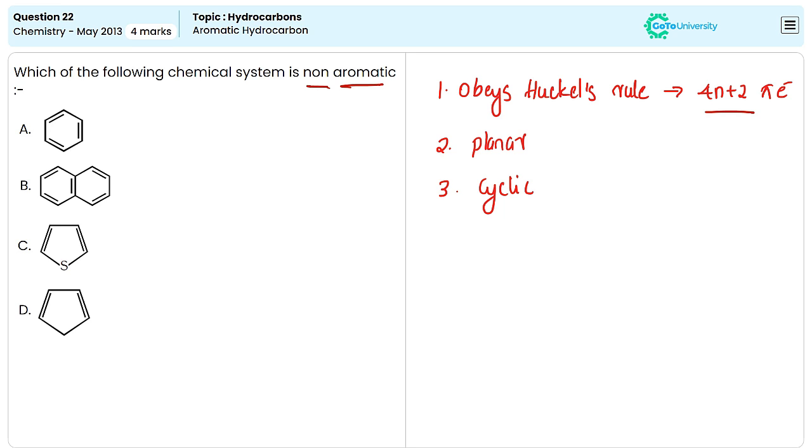And the third one is cyclic. The molecule should be cyclic in nature. It means the atoms form a ring structure.